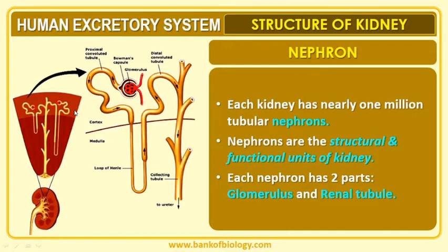In this diagram, whatever you are seeing, this is the structure of the nephron. Nephrons are the structural and functional units of the kidney. Each nephron consists of two parts: one is referred to as the glomerulus — you can see the red mark here — and the other is the tubular-like structure referred to as renal tubules.